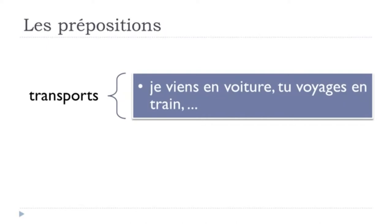The main distinction to keep in mind: we tend to use 'en' for a means of transport when you are inside it — so inside the car, inside the train, inside the metro, inside the tram. That's why we use 'en voiture', 'en train'. However, for bicycle, motorbike, or on foot, you use 'à' — because you are not enclosed inside them. So 'à vélo', 'à moto', 'à pied'.